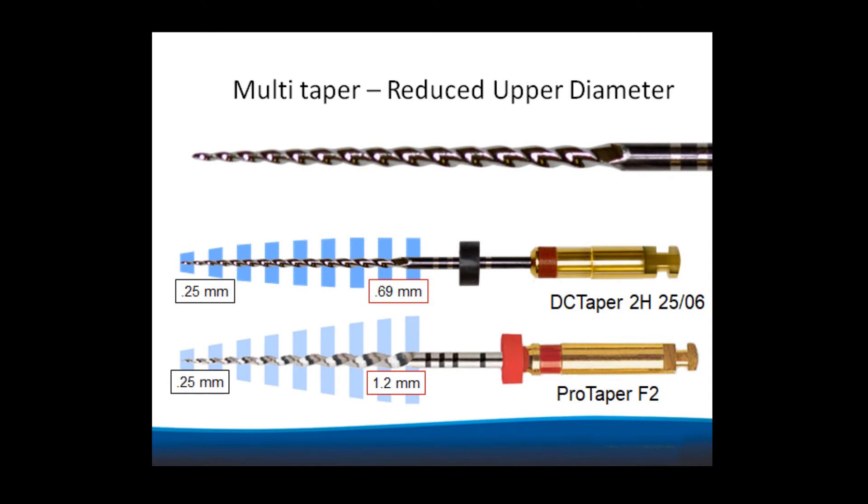So what is the problem? Well, it's to do with the fact that the DC taper instrument has a reducing taper in the upper segment of the instrument, and in fact goes down to a 0% taper in the last few millimeters.